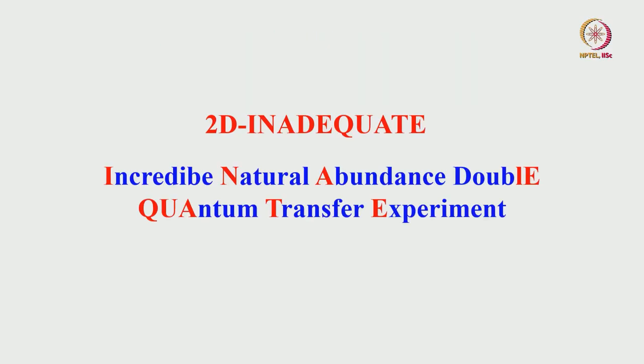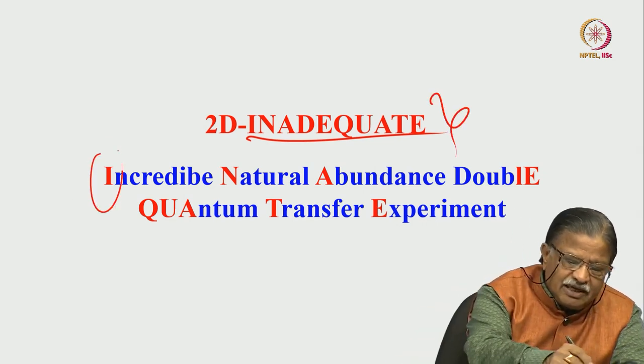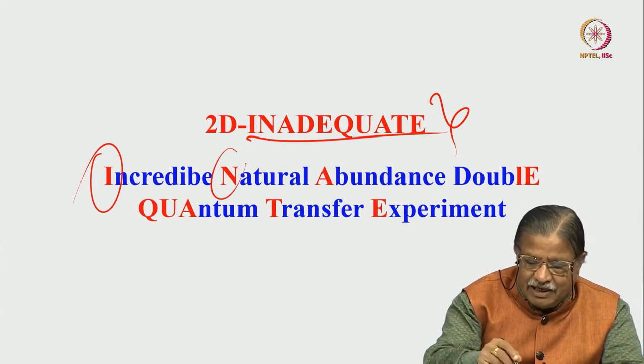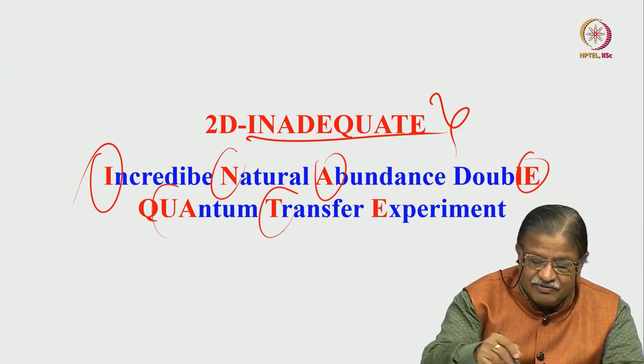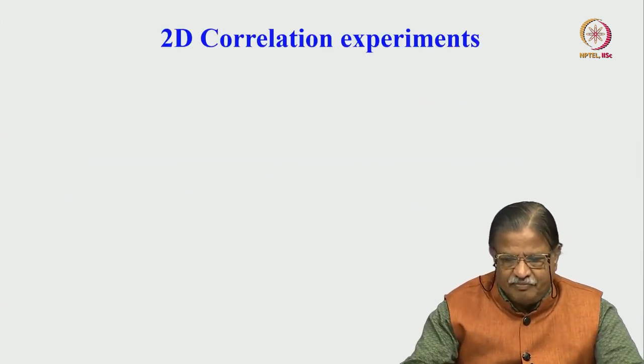Today we will go into a different experiment where we are going to see the correlation between two dilute spins. This experiment is called the two-dimensional INADEQUATE experiment. As I always say, one should have adequate knowledge of NMR to understand this. Of course, INADEQUATE stands for Incredible Natural Abundance Double Quantum Transfer Experiment.